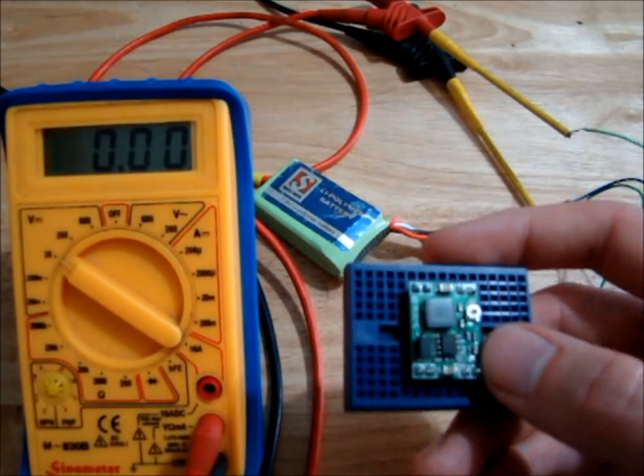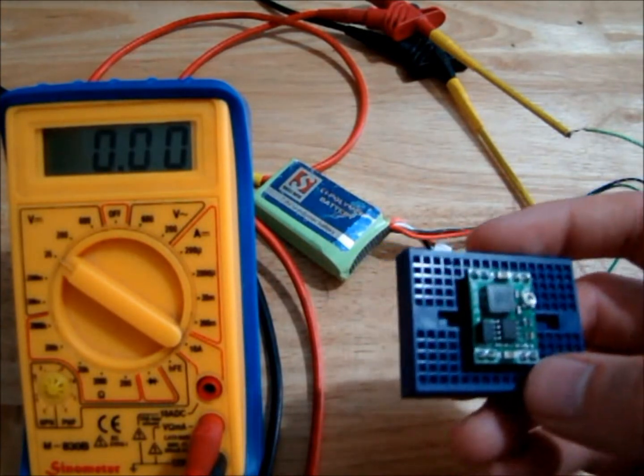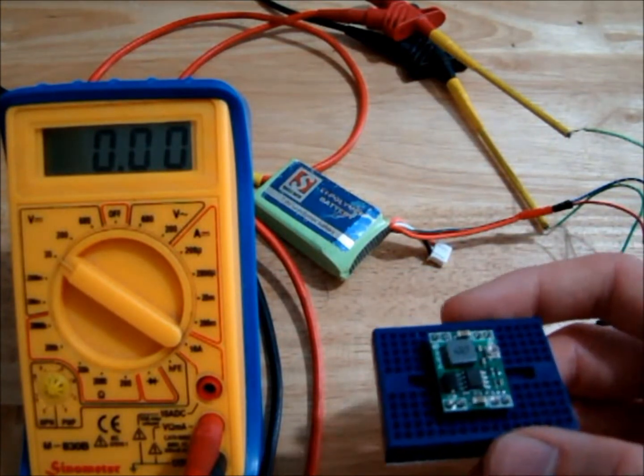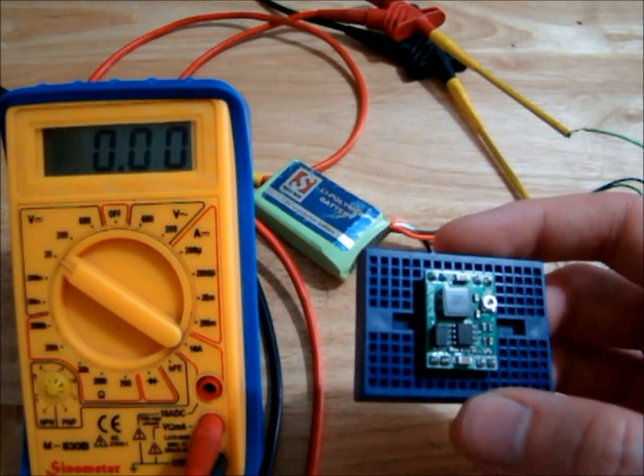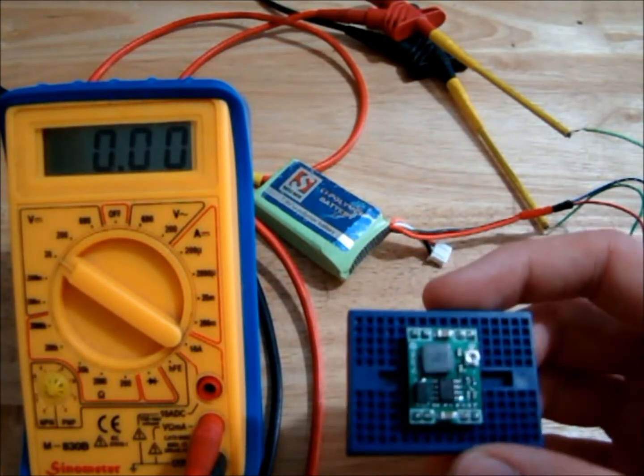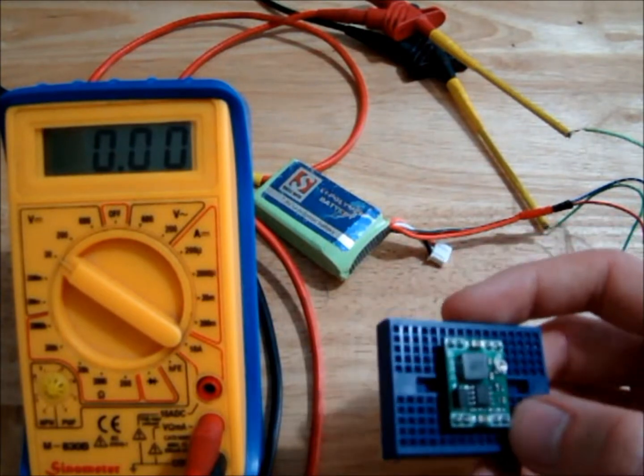And it does that by switching the voltage with a frequency of around about 1 megahertz according to the eBay seller. So that's basically what it does - it's just an alternative to a voltage regulator.